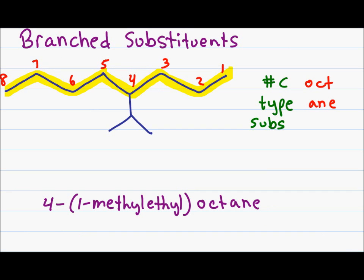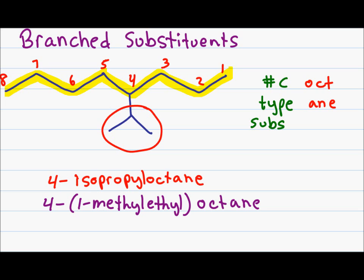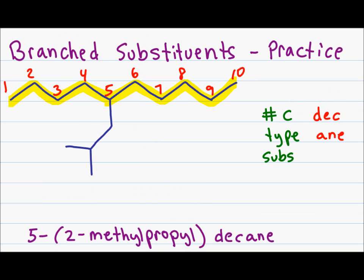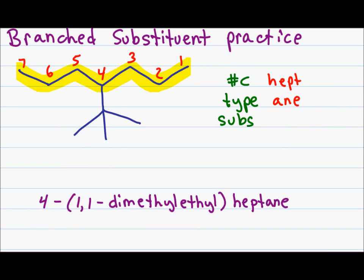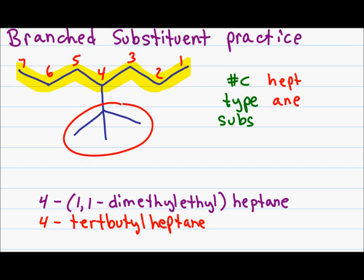Returning to our previous examples: we recognize the first substituent as an isopropyl group, giving a much simpler name of 4-isopropyloctane. The second example can also be named isobutyl, giving 5-isobutyldecane. The last messy substituent can now be renamed tert-butyl, giving a final name of 4-tert-butylheptane.